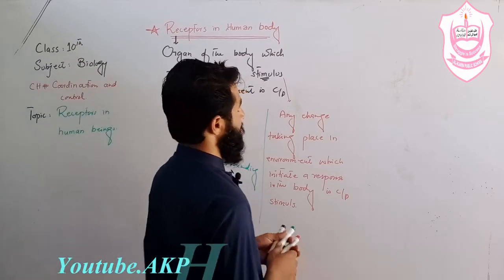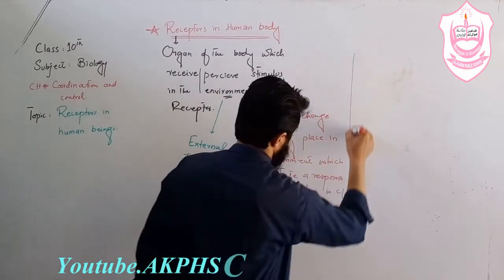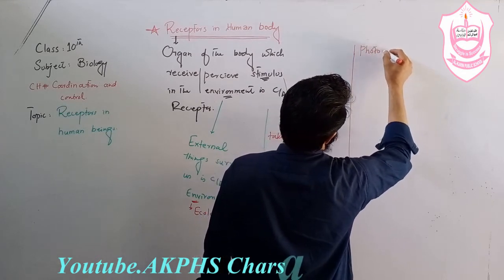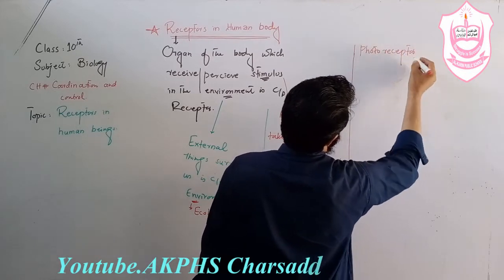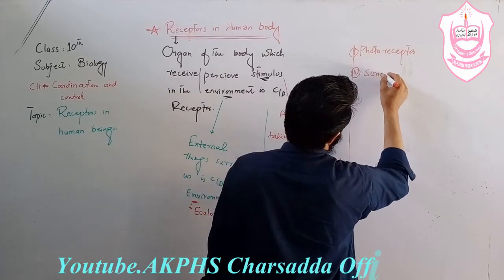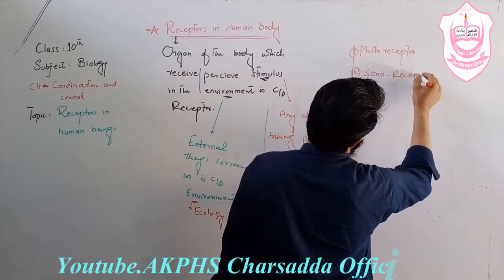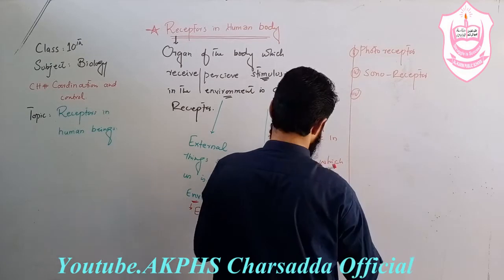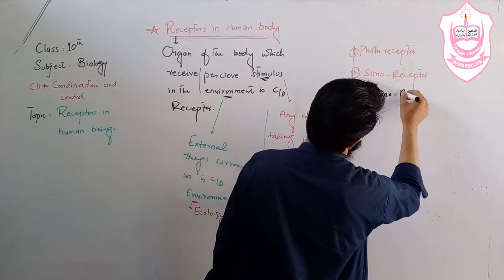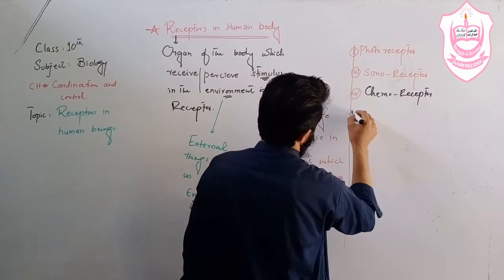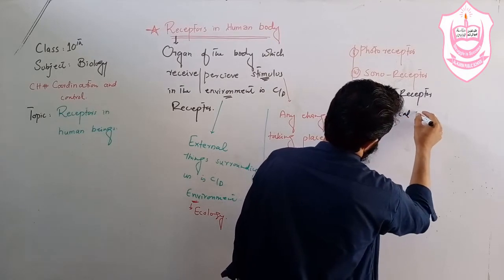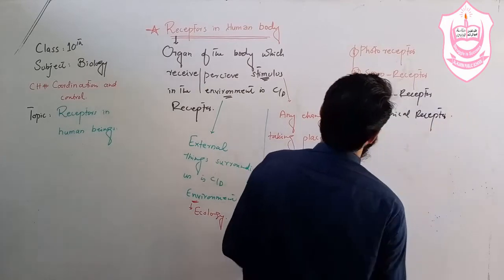There are many types of receptors which detect different changes in the environment. The first is photoreceptor, second is sonoreceptor, third is chemoreceptor, and fourth is mechanical receptor, also called thigmoreceptor.